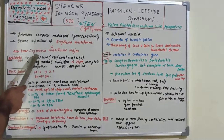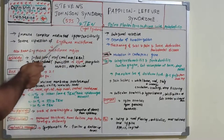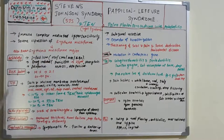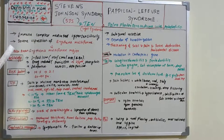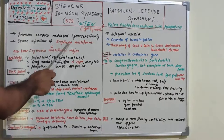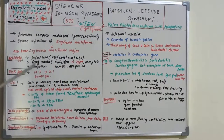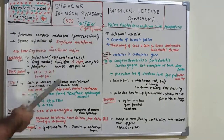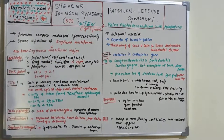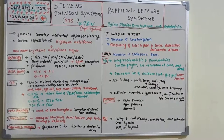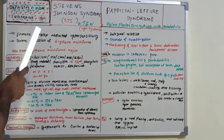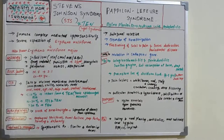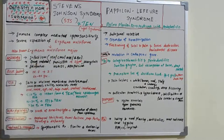Stevens-Johnson syndrome is also known as erythema multiforme major, so we should understand what erythema multiforme is. Erythema multiforme is basically a skin immune reaction due to infection or medication. The name combines erythema (redness), multi (many), and forma (shapes), describing a rash where each mark resembles a bullseye. Stevens-Johnson syndrome is a severe form of erythema multiforme major.